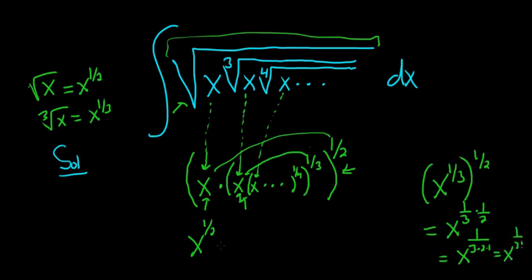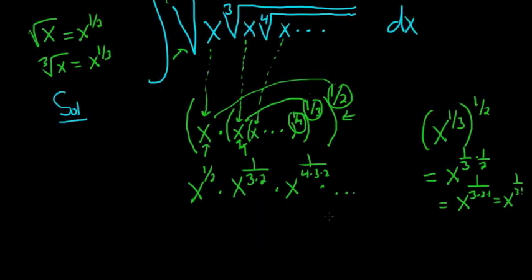That's the same thing as 3 factorial. Extra knowledge. But I'll write it like this, x to the 1 over 3 times 2. So it's going to be a 3 factorial. And the next one is 1 fourth times 1 third times 1 half. So that's going to be times x to the 1 over 4 times 3 times 2, which is 4 factorial times dot, dot, dot.